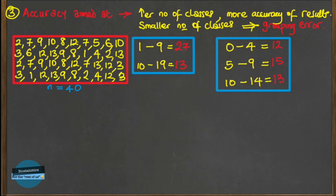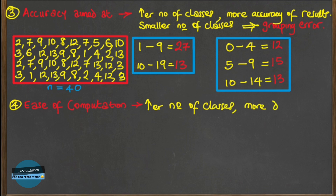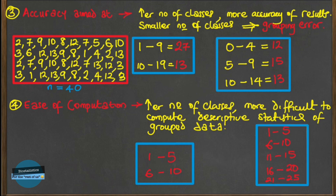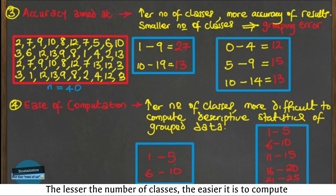The last factor is the ease of computation of descriptive measures of the frequency distribution, such as mean and variance. The more the number of classes, the more difficult it is to compute these measures by hand. If you had just two classes compared to five classes, two classes would be easier to compute the mean for because you compute for two classes instead of five. So remember: the fewer the number of classes, the easier it is to compute the statistics.